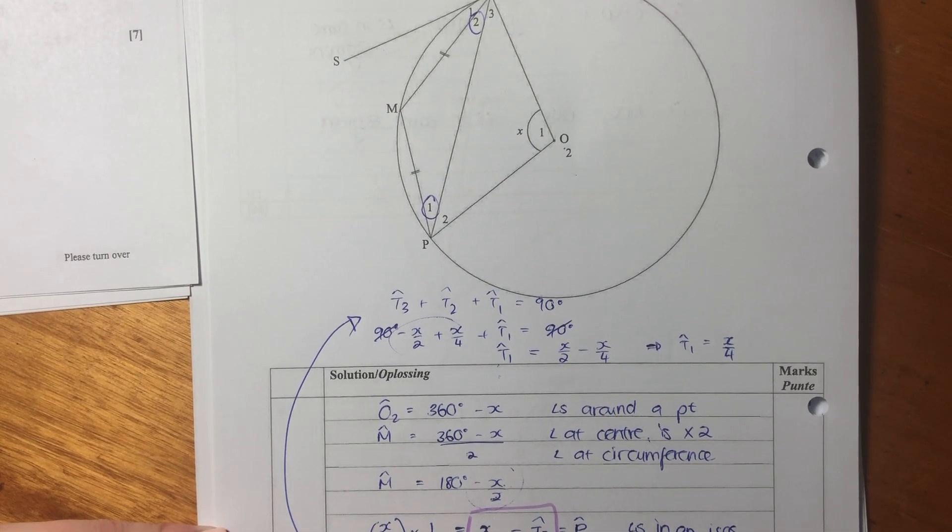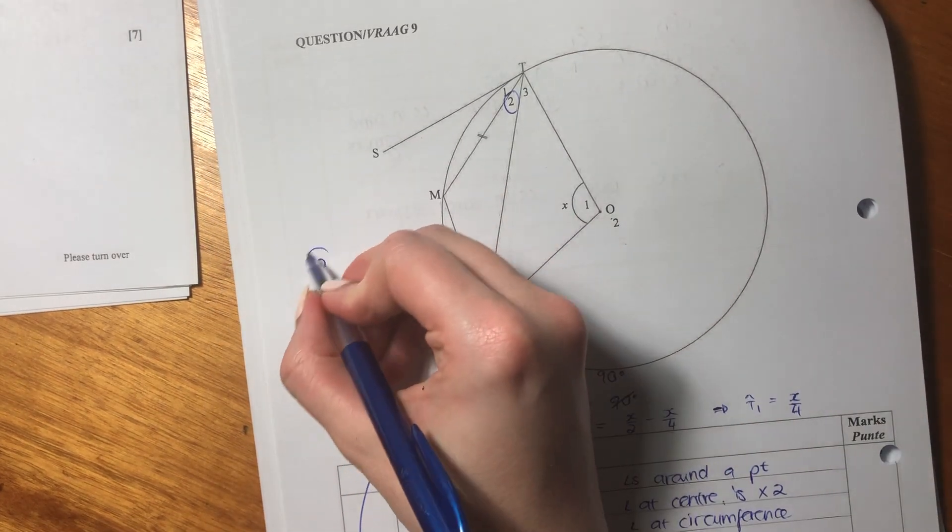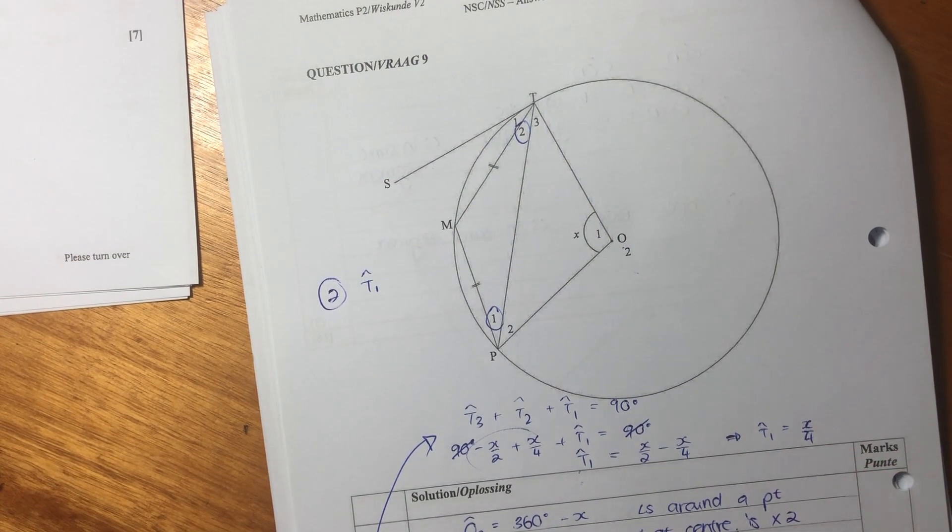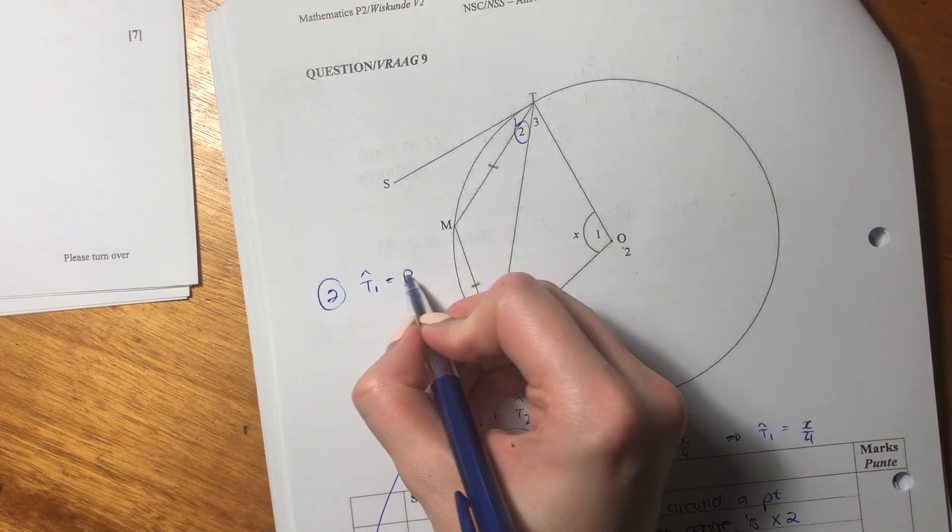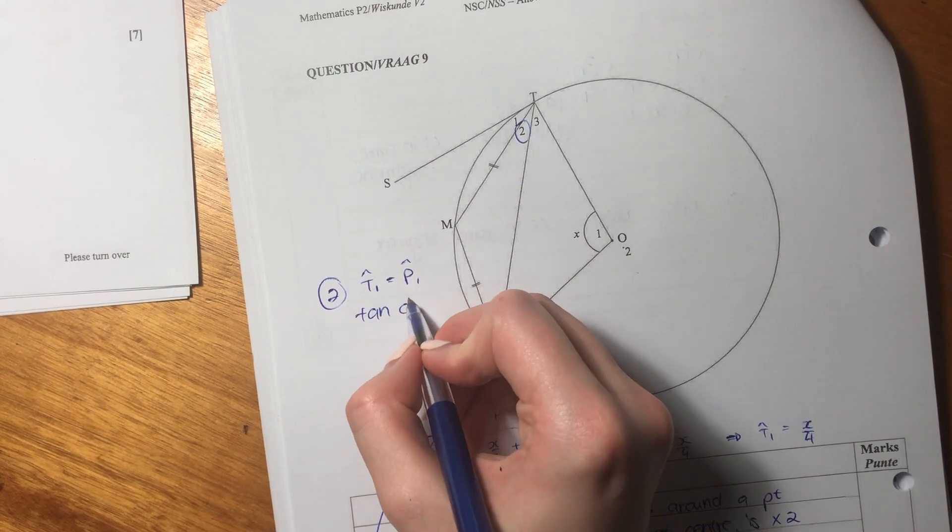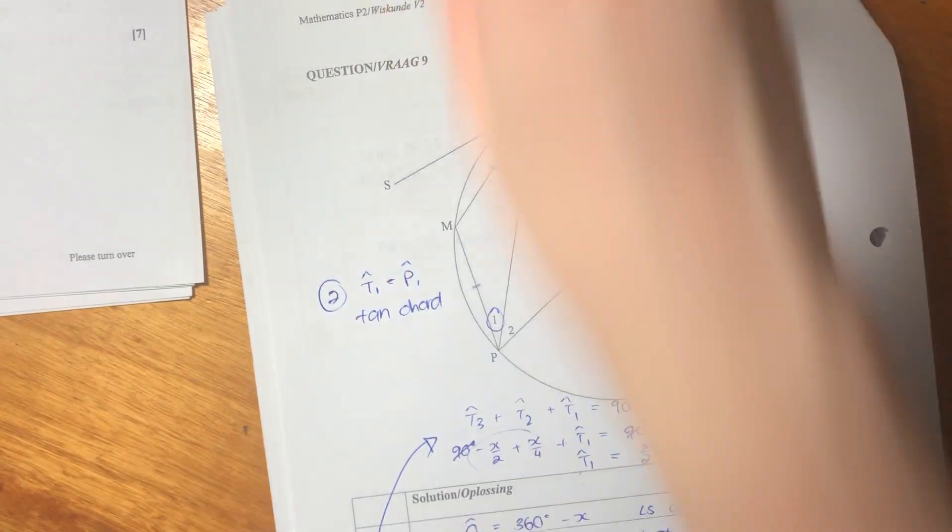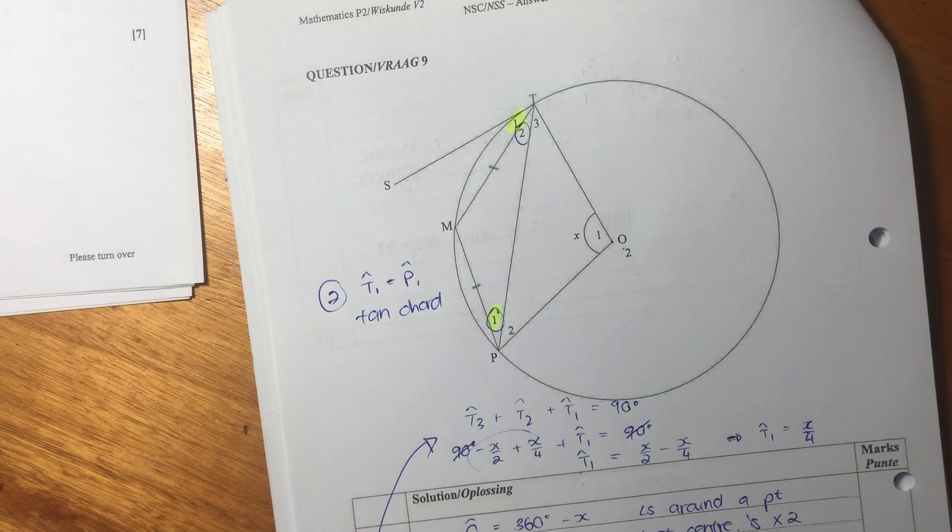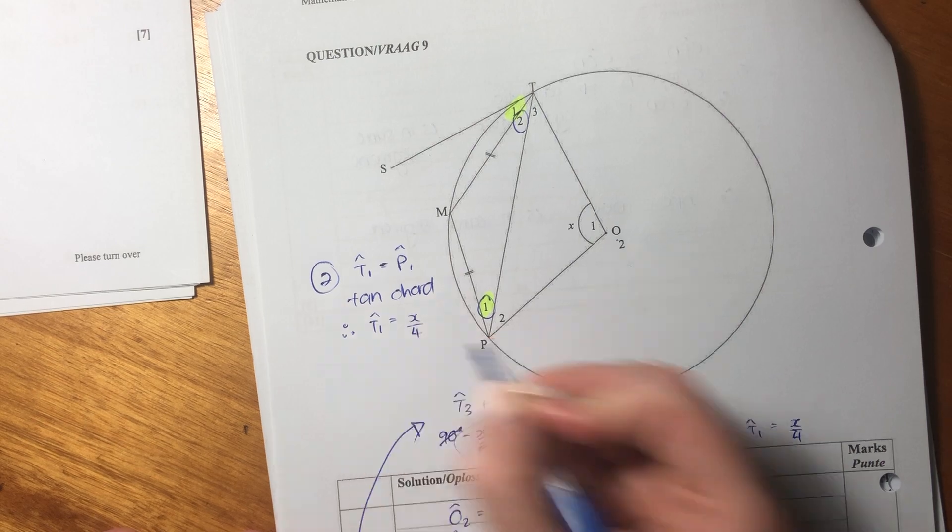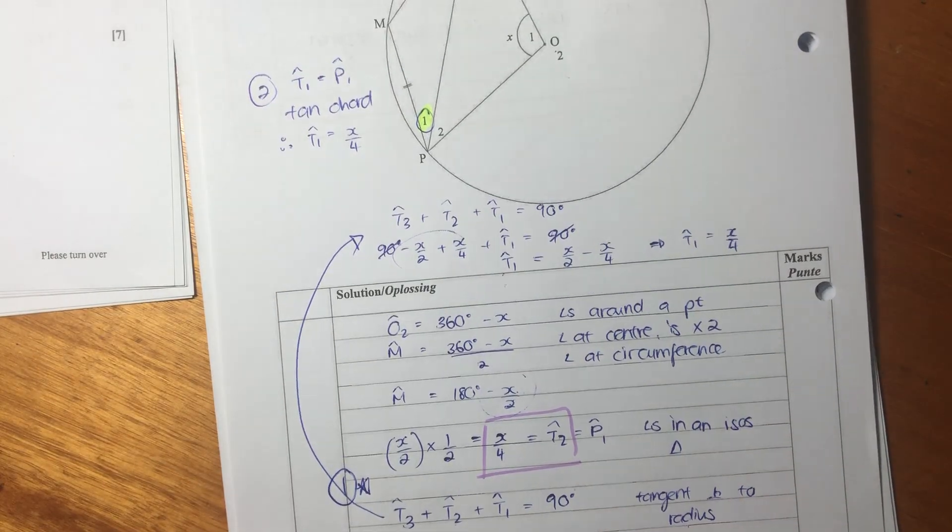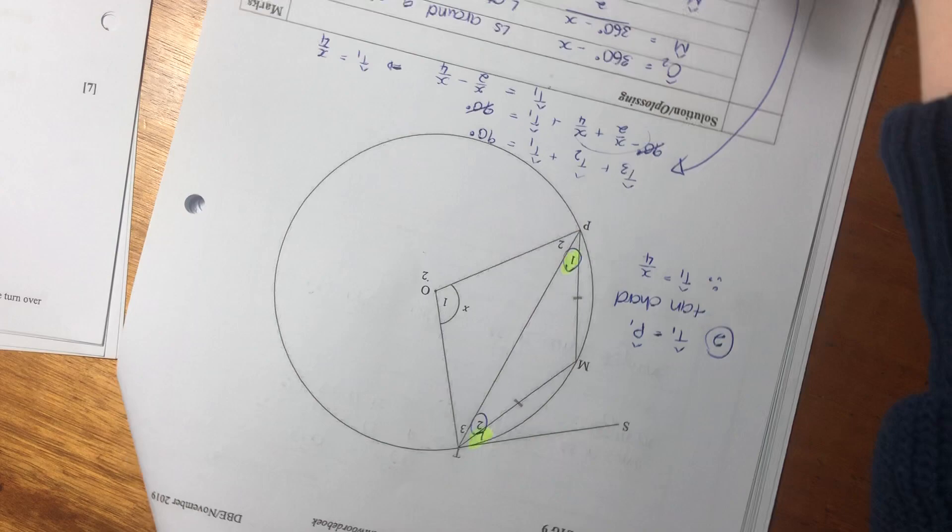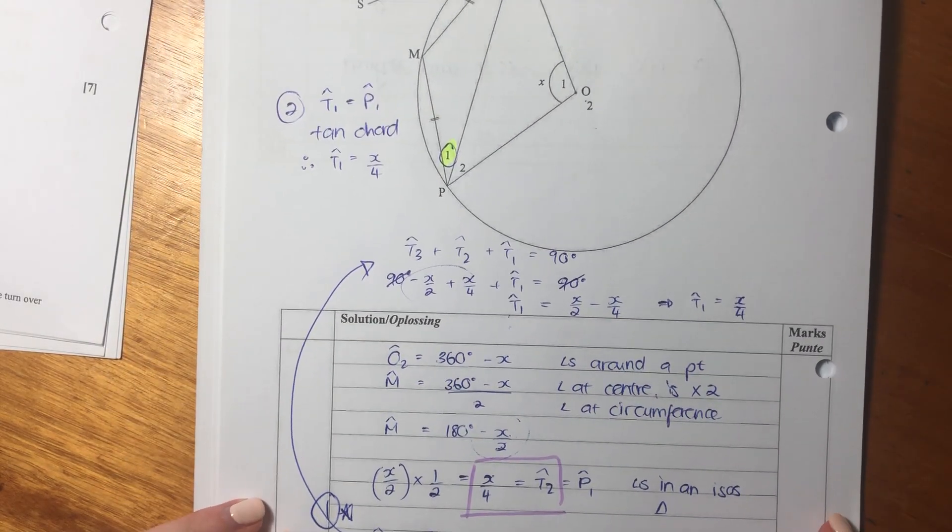Now, instead of going this route, this is one option. The second option you could have done for T1 is you could have said, well, T1 equals P1. T1 equals P1 because of tan chord. So if you look here, T1 and P1 equal each other because of tan chord, therefore, T1 equals X over 4. So you can use this quite lengthy method I did with the tangent and the radius, or you can identify tan chord. But sometimes it's difficult to identify tan chord because you have to do a little bit of a switcheroo. But I just wanted to give you two different options of doing this geometry question.